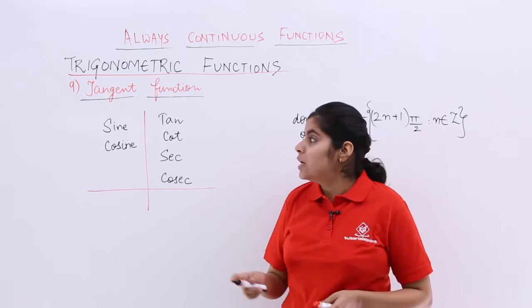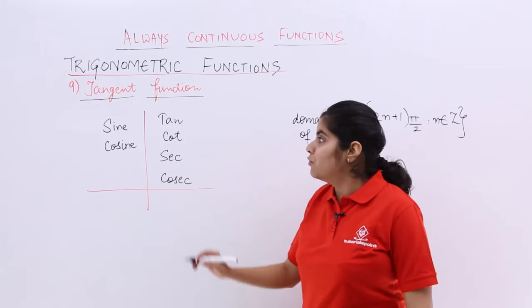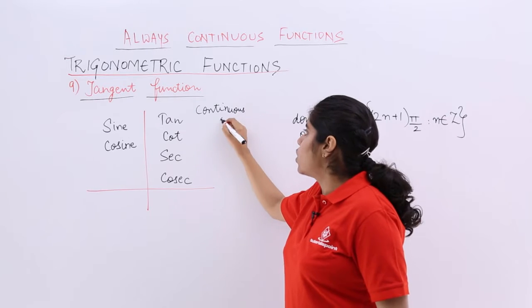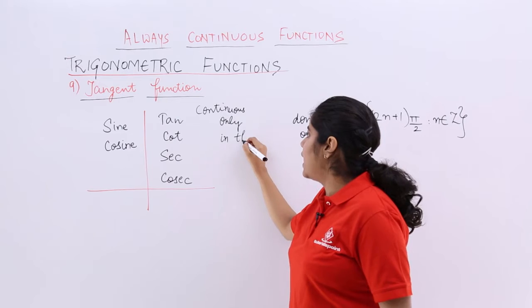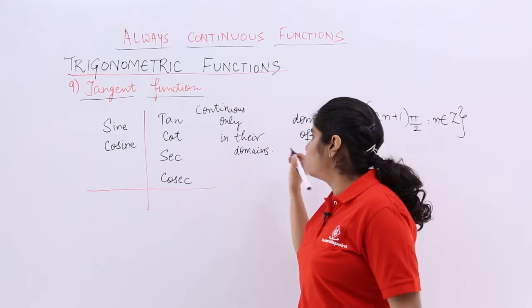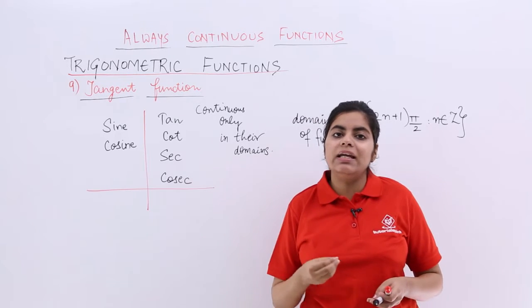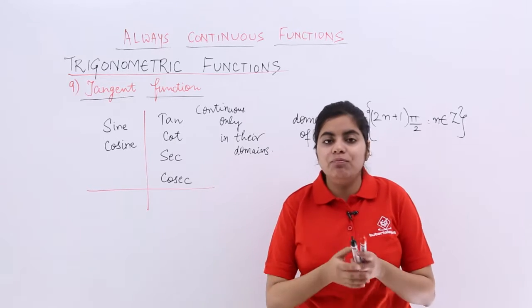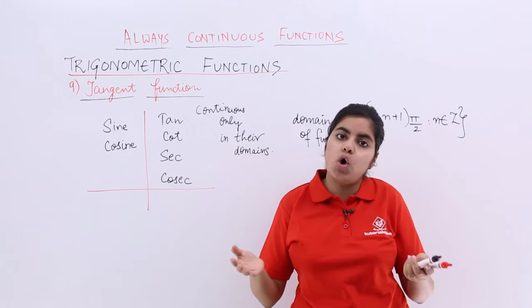Similarly, you can say about cosecant. So these four are the functions which will be continuous only in their domains. If you watch the previous video on sine, when I proved that sine x is continuous, I said sine x is continuous in its domain. But actually, being continuous in its domain does not always mean always continuous.